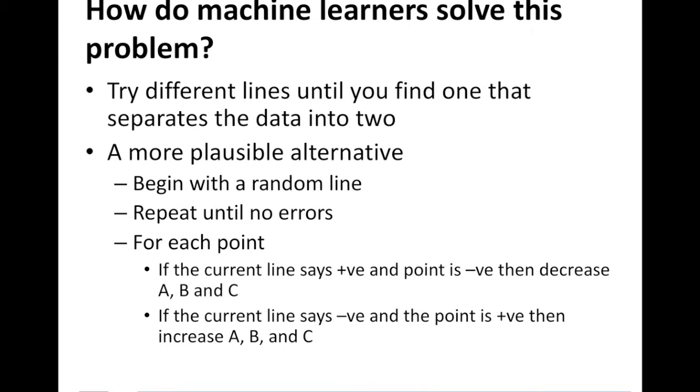A more plausible alternative is: begin with a random line, repeat until no errors. So begin with a line and keep changing the line such that you arrive at a line when there are no errors at all. If such a line exists and you find it, then you have a solution.